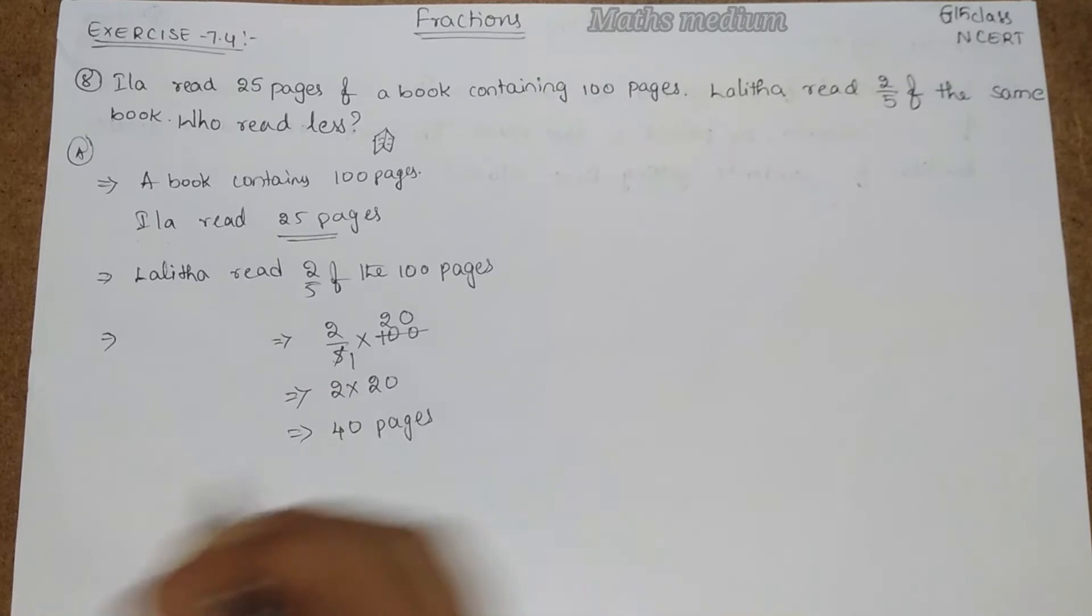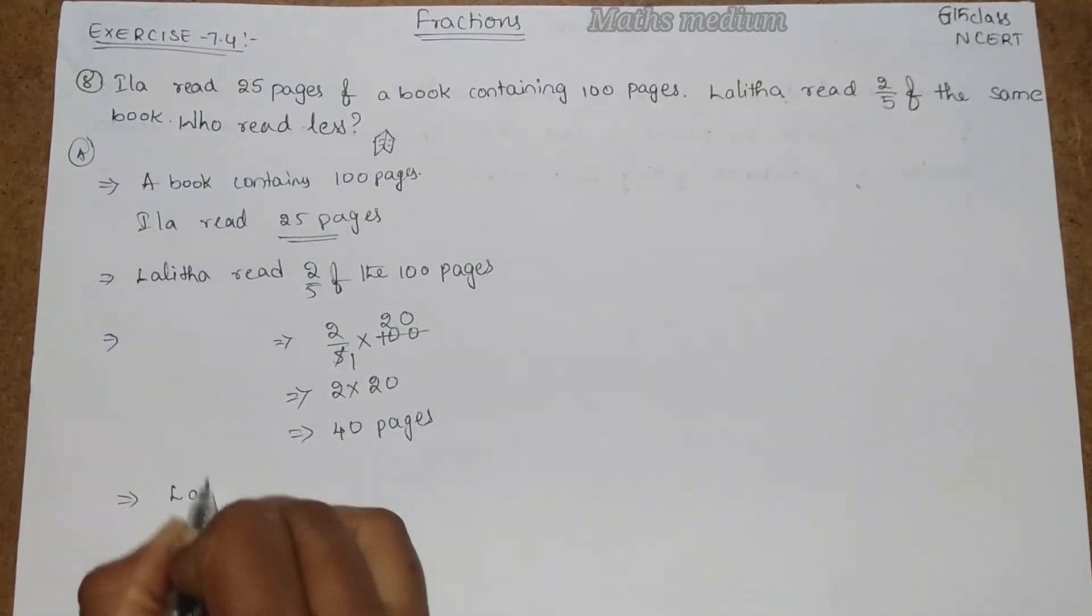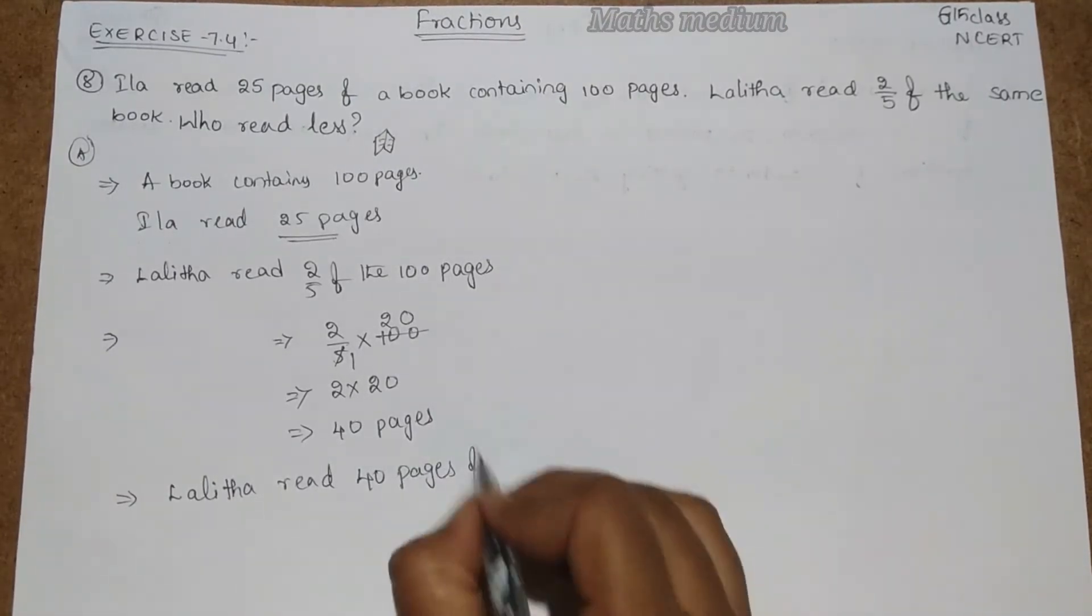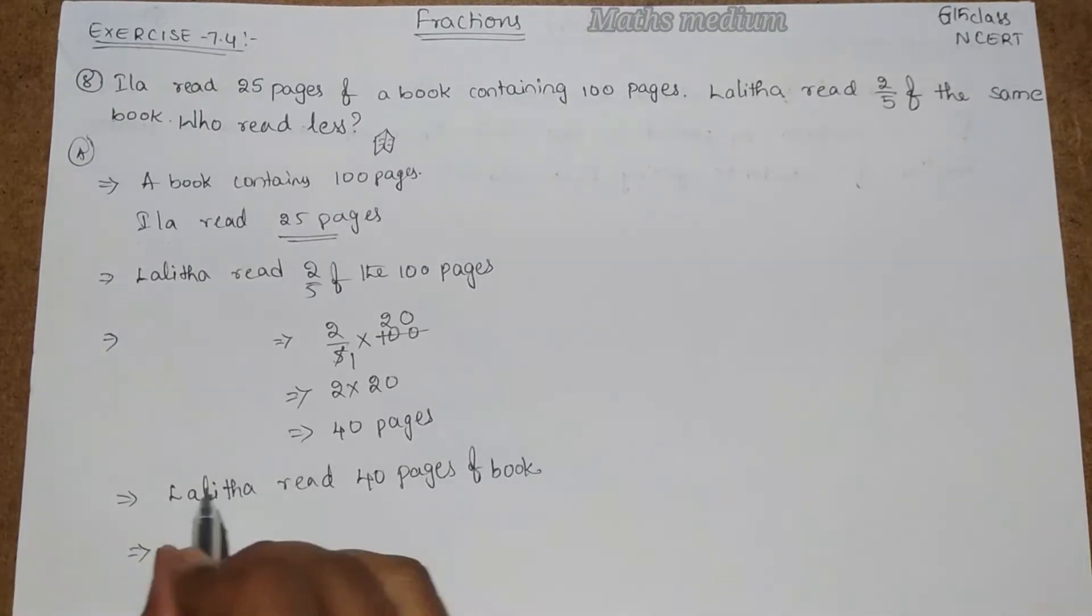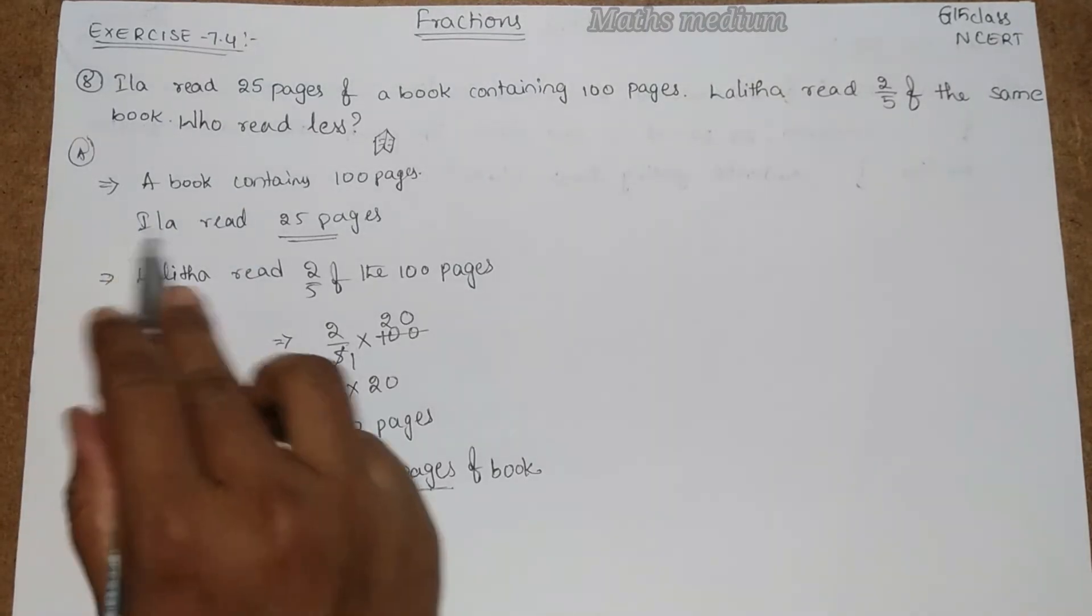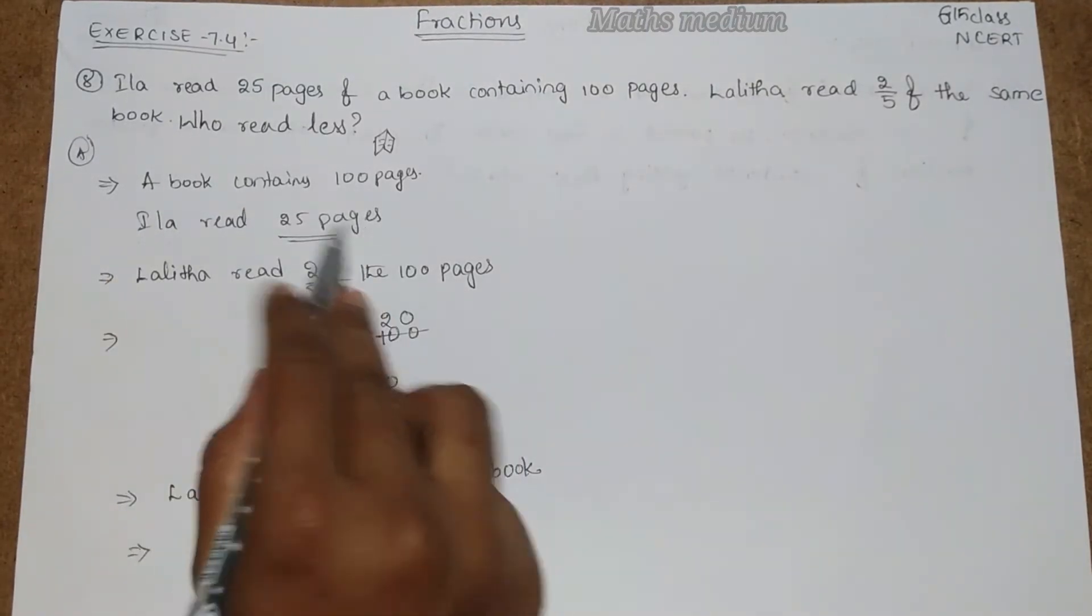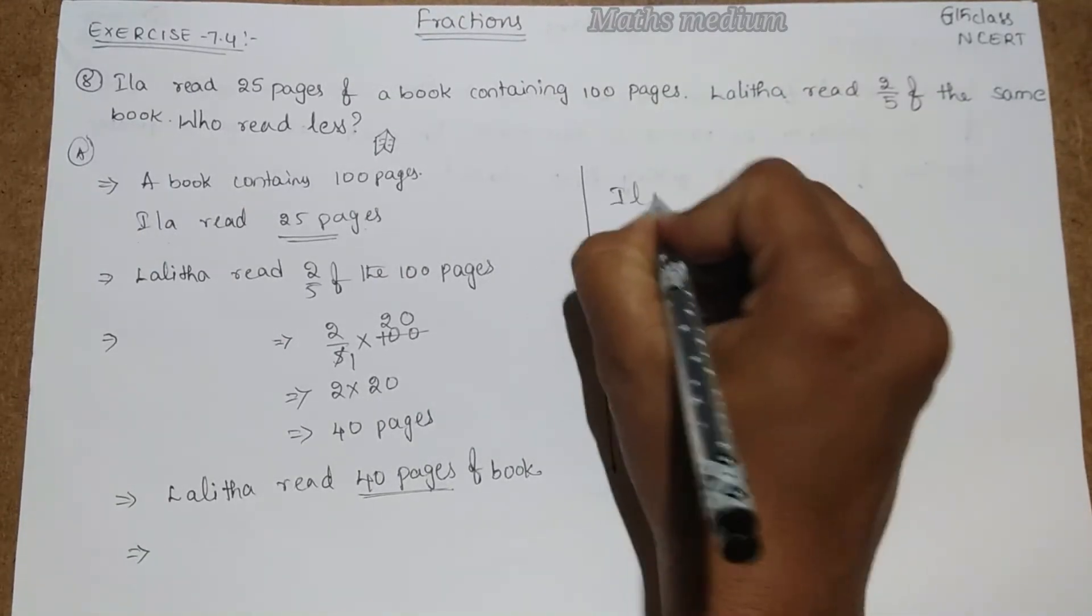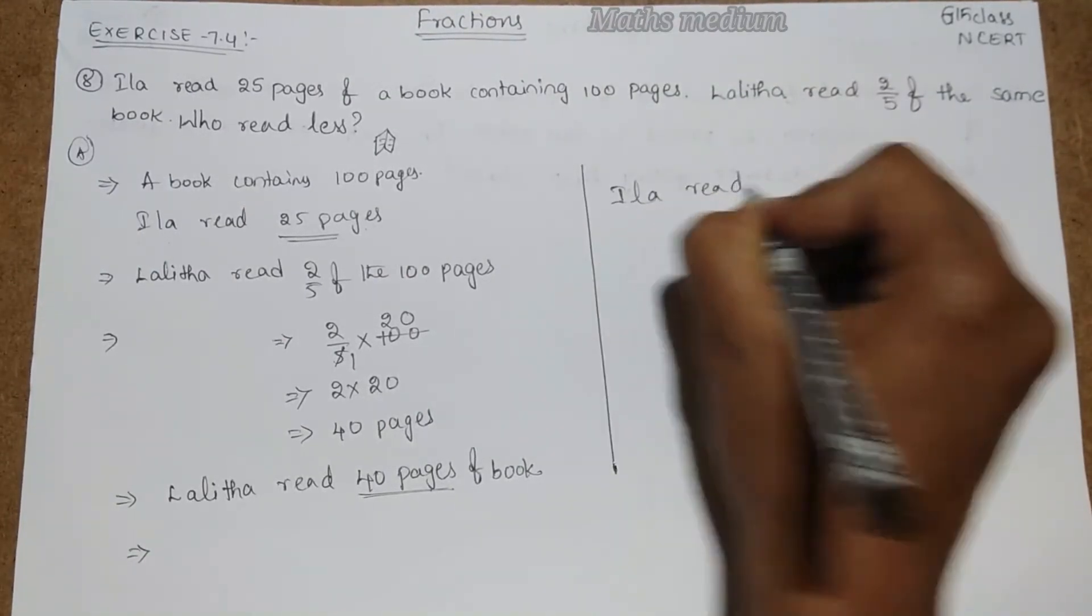So conclusion is: Lalitha read the 40 pages of book. Lalitha read more pages of that book, but Ilar reads 25 pages of that book. So who read less? Ilar read less.